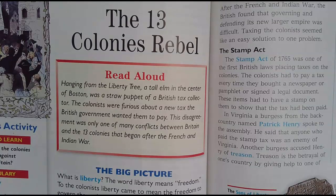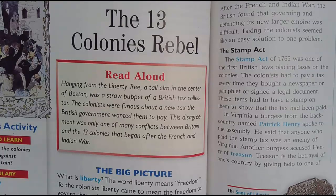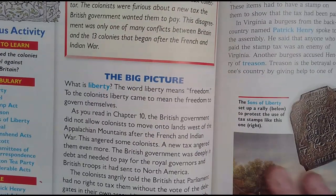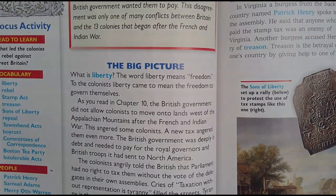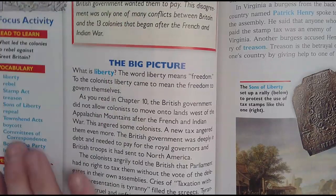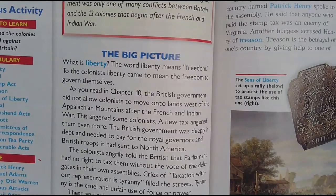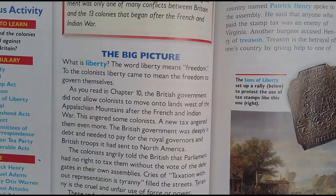There's a puppet hanging from a tree and the puppet is a picture of the British tax collector. If it's hanging from a tree, they probably put a rope around its neck so it looks like they're trying to kill him. What message would it send to you if you saw something that looked like you hanging from a tree? Would you feel warm and fuzzy? No — really afraid. The word liberty means freedom. To colonists, liberty came to mean freedom to govern themselves.